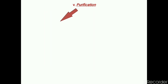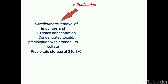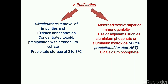If the preparation passes the specific toxicity test, the toxoid is ready for further purification. The first method of purification is ultrafiltration, which removes impurities and purifies the preparation on the basis of molecular weight. This is also a method of concentration. The concentrated toxoid is then precipitated with ammonium sulphate and stored at 2 to 8°C until further use.